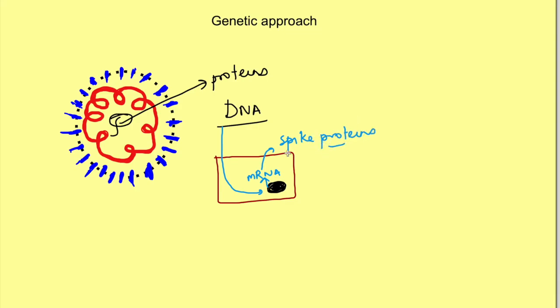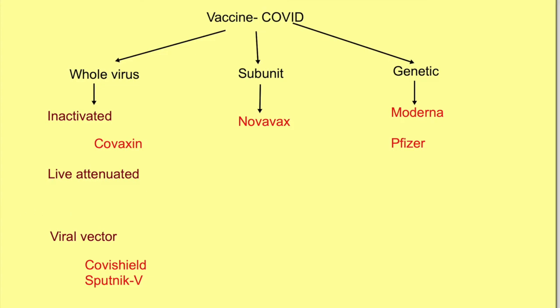Or they can be vaccines which are mRNA based which can be directly translated into proteins upon entering into the cells of the body. The vaccines which have been developed using this approach are Moderna vaccine and Comirnaty vaccine which is developed by Pfizer. So these were broad vaccine approaches which are being used for development of vaccine against COVID-19.